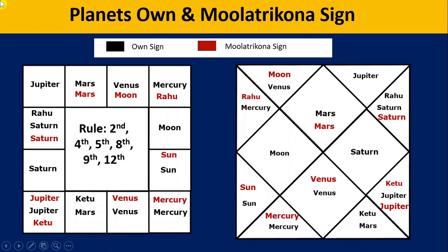The black sign denotes the Moon sign and the red colored sign is the Mulatrikona sign. These are the rules. Let's take an example: how Saturn treats Moon — whether it treats Moon as friend or enemy.